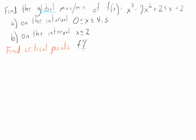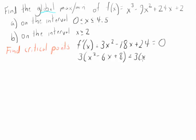Let's take a derivative, set it equal to zero, see what we can do. We can clearly take out a three, and that factors. So we have two critical points: two and four.